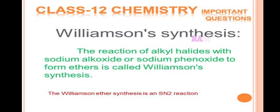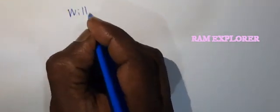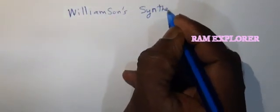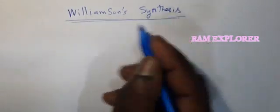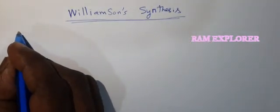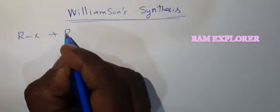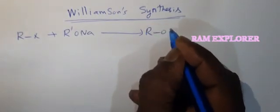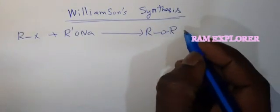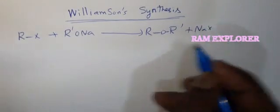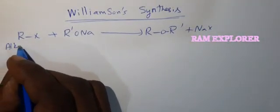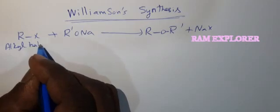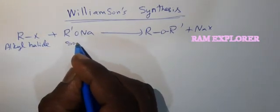The reaction of alkyl halides with sodium alkoxide or sodium phenoxide to form ethers is called Williamson synthesis. Williamson ether synthesis is a laboratory method to prepare ethers by allowing alkyl halides to react with sodium alkoxide. Let us see the reaction.